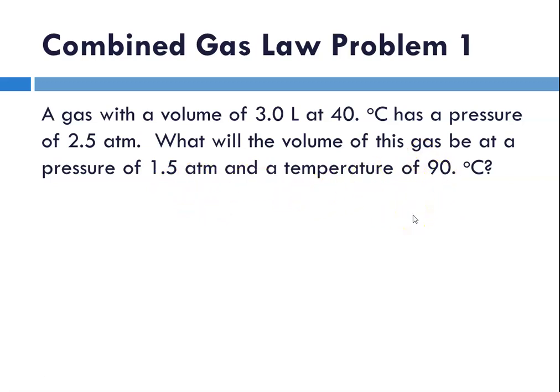So for starters, let's identify our variables. So here, P1 is our 2.5 atm. P2 is our new condition, which would be 1.5 atm. Our initial volume is 3.0 liters. We're asked to solve for our final volume, so V2 is our question mark. Our T1 is 40 degrees C, but remember, we have to convert to Kelvin when we're talking about gases. And our T2 is 90 degrees C, which is 363 Kelvin.